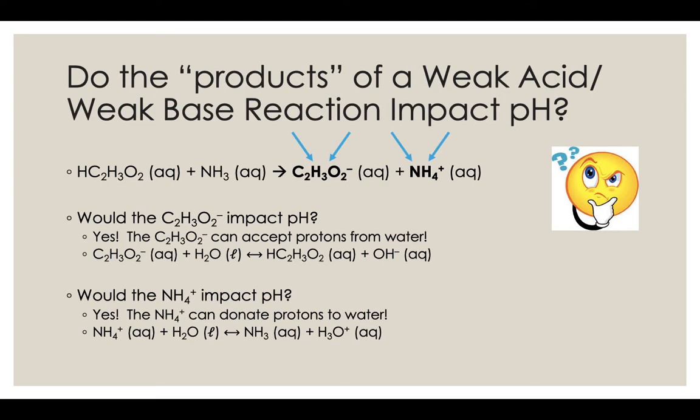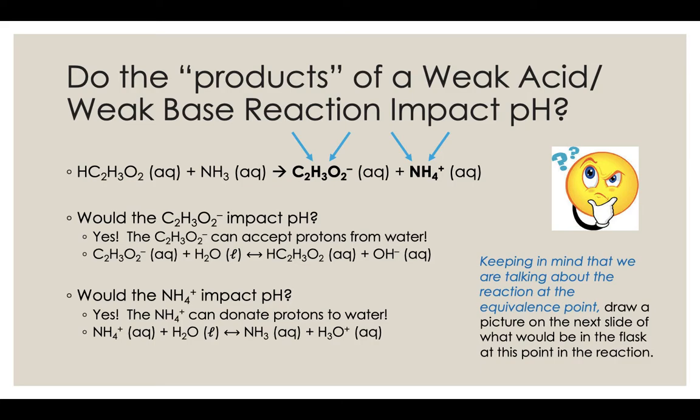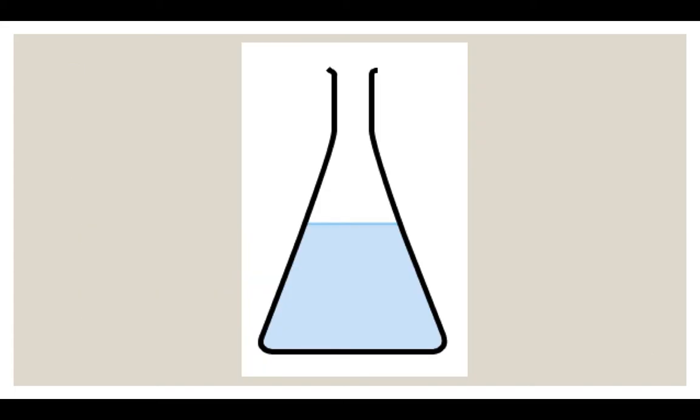So now we kind of have a real mess if we want to think about what's in that flask at the equivalence point. So we're going to use up all the original acetic acid and ammonia because if we're at the equivalence point, we react according to the stoichiometry. There's no limiting reactants. There's no excess reactants. There's products only. The problem is, is that those two products, both of them, can react with water to make extra, extra stuff.